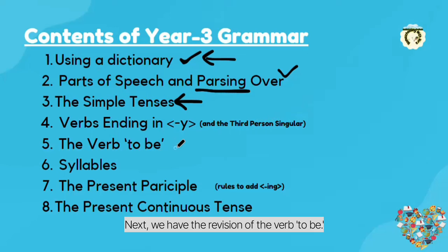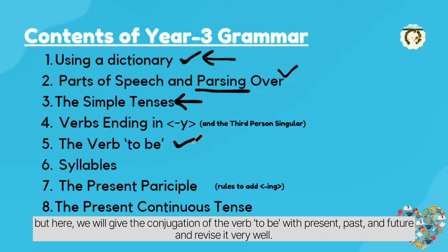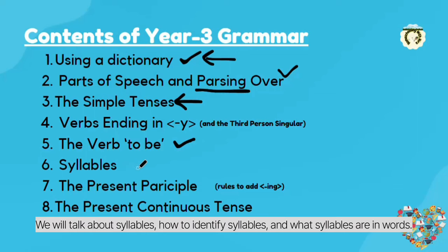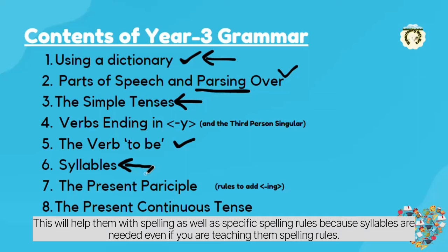Next we have the revision of verb 'to be'. We have already introduced this, but here we will give the conjugation of verb 'to be' with present, past and future and revise it very well. Then we will talk about syllables — how to identify syllables and what are syllables in words. This will help them with spelling as well as with certain spelling rules, because syllables are really needed when teaching spelling rules.